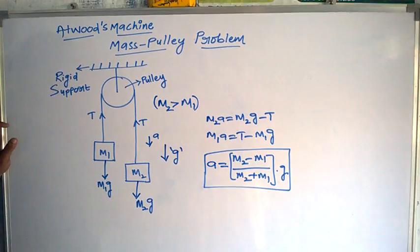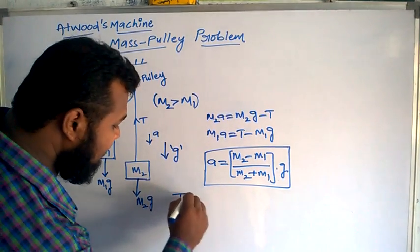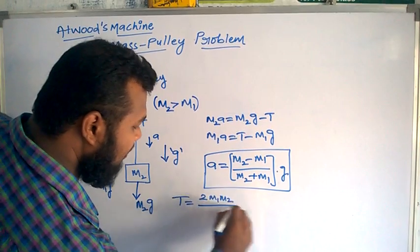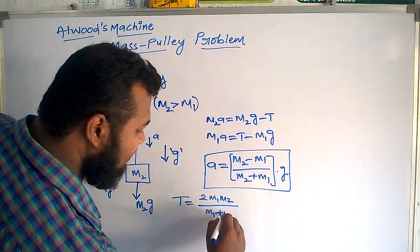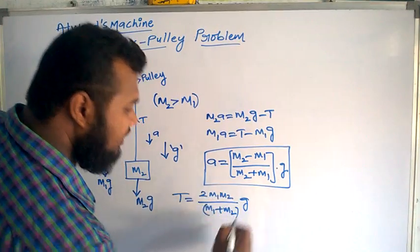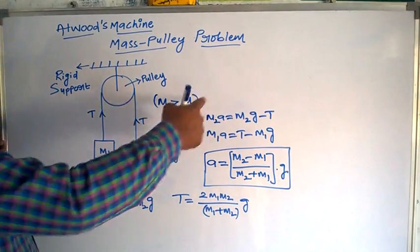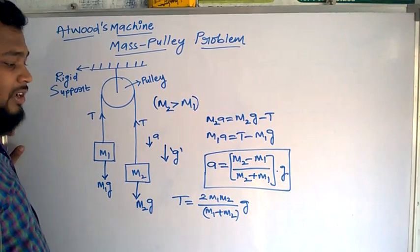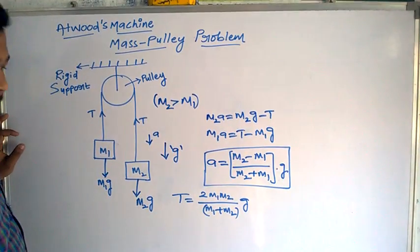Similarly, the tension in the string equals 2m1m2 divided by (m1 plus m2) times g. You will get this by substituting the acceleration anywhere in the equation, and you will get the tension of the string as 2m1m2 by (m1 plus m2) into g.